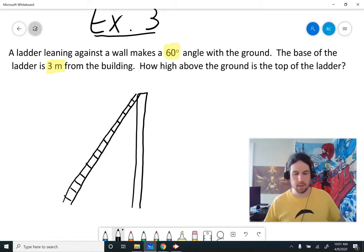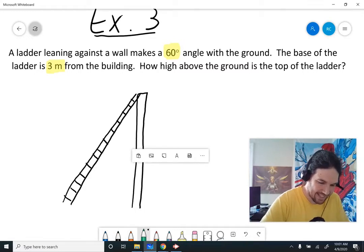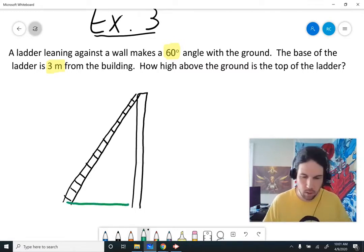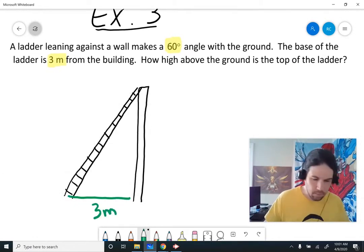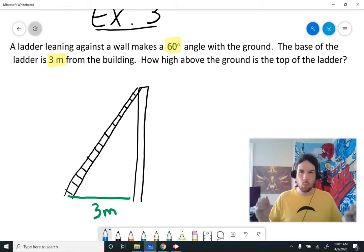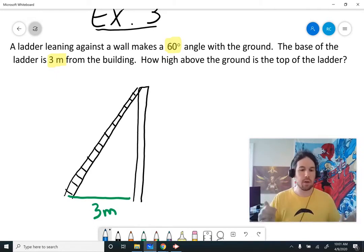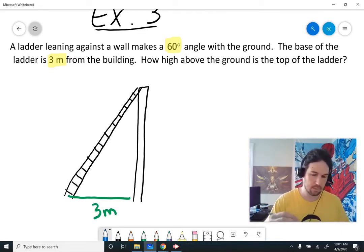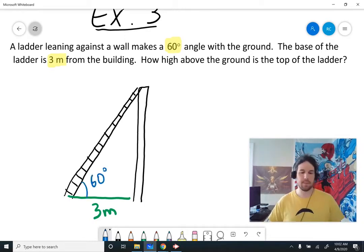Shut up, I'm an artist. And it says that the distance from the ladder to the wall is 3 meters. And it says that the ladder makes a 60-degree angle with the ground. So which one of these angles, think about it for just a sec, which one of these angles is it talking about when it says it makes a 60-degree angle with the ground?